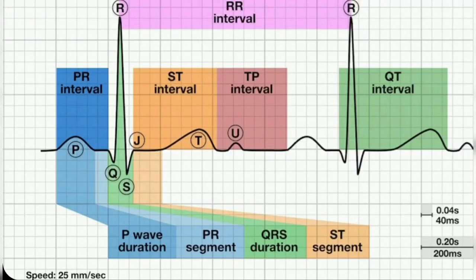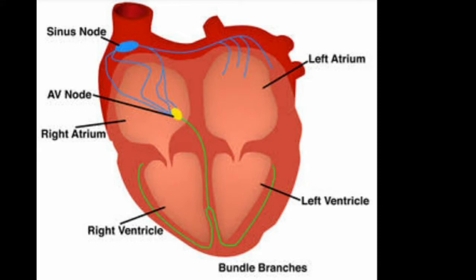This video is about first degree heart block, or first degree AV block. First degree heart block is all about the PR interval, so let us first look at the PR interval of the ECG. The PR interval is the time from the onset of the P wave to the start of the QRS complex. It reflects conduction of electrical impulse from the SA node through the atria and then through the AV node, with most of the time spent at the AV node, known as AV nodal delay.